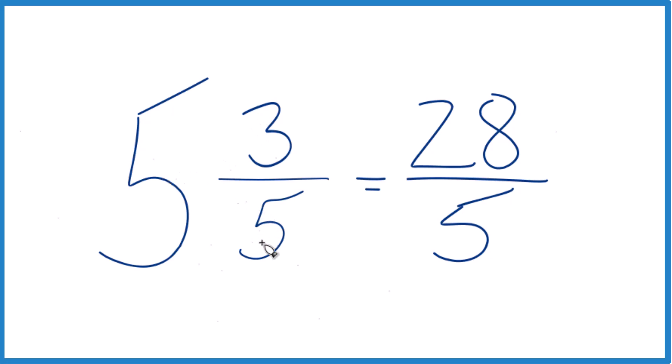5 times 5, 25. 25 plus 3, that gives us that numerator, the 28. Bring the 5 across there for the denominator, and you're done.